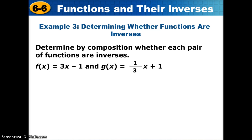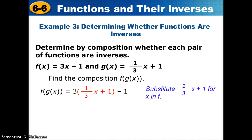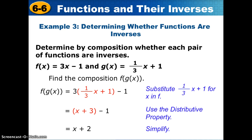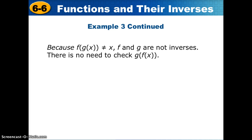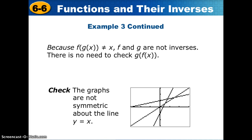Let's look at example three. We have two functions, f of x and g of x. We start by finding the composition f of g of x: it's going to be three times g of x, minus one. After simplifying, we end up with x plus 2. Since f of g of x is not equal to x, we know that f and g are not inverses of one another. We don't need to go any further. When we graph them, we can also see that they are not symmetric about the line y equals x.